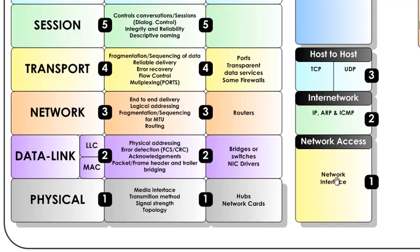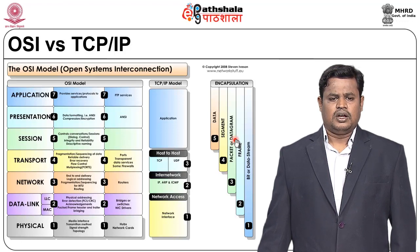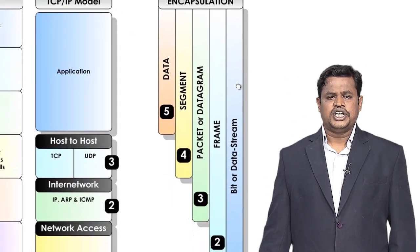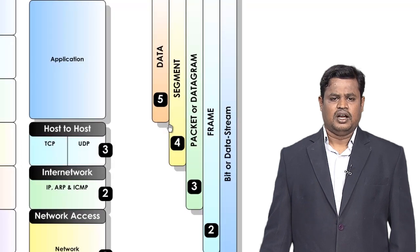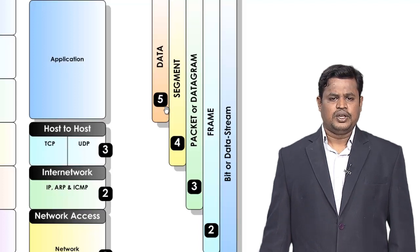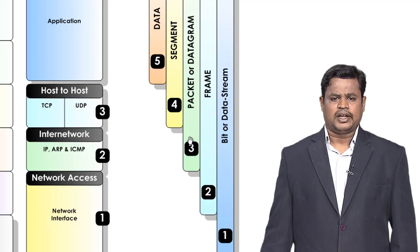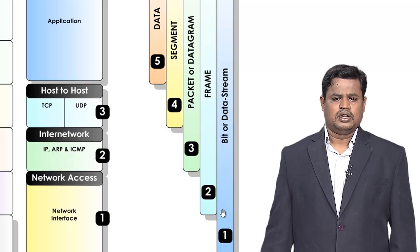When representing the network model there is a process called encapsulation. User data from the top of the TCP/IP model passes through each layer: it becomes a segment at the transport layer, a packet at the network layer, a frame at the data link layer, and a bit stream at the physical layer.